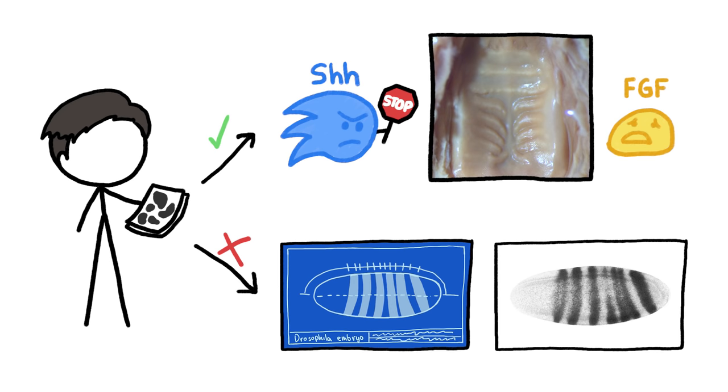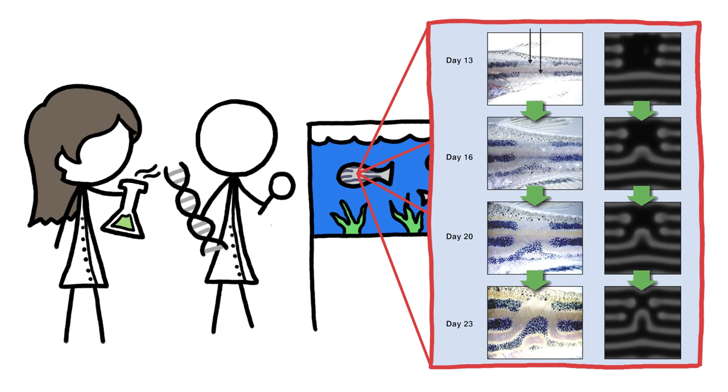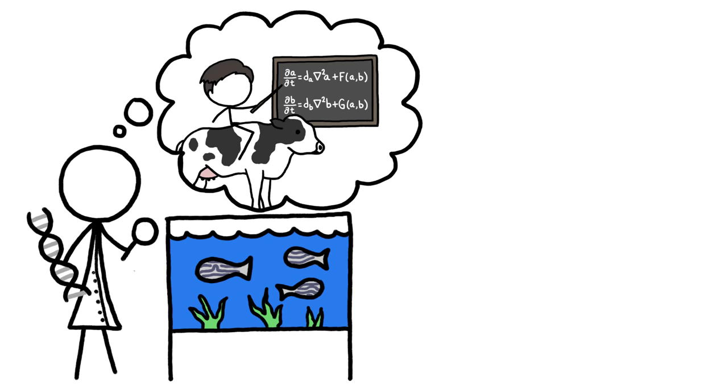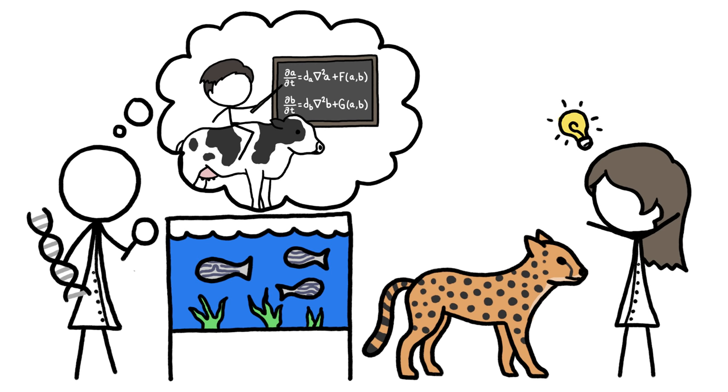But regardless of how perfectly or imperfectly Turing's theory describes what we see in the real world, the coolest thing about it may be that it inspired biologists to go looking for evidence of Turing's ideas in living creatures. So observations inspired a theory that inspired observations that are bringing us a little closer to understanding how the cheetah got its spots and its stripes.